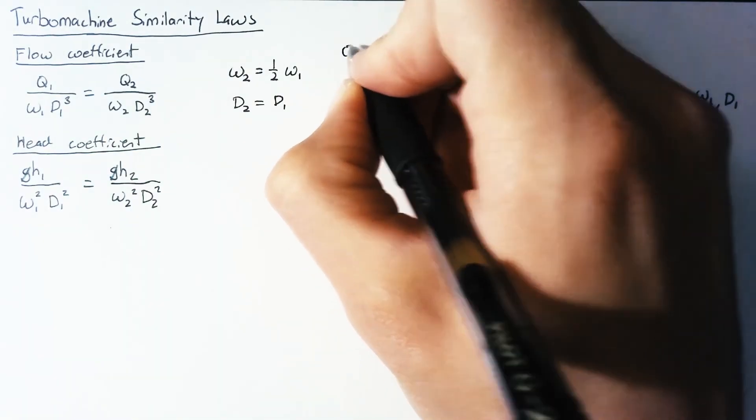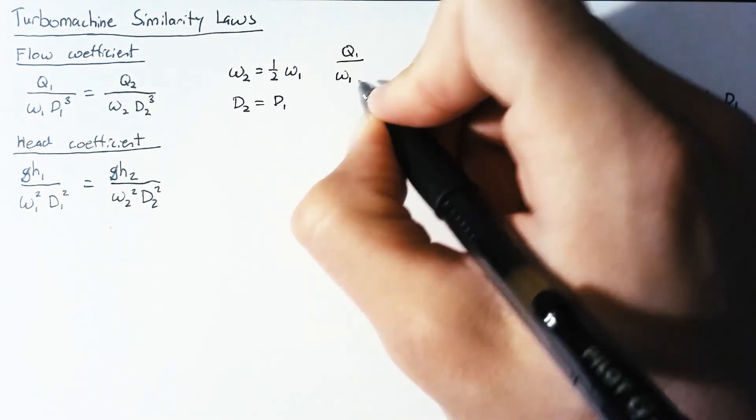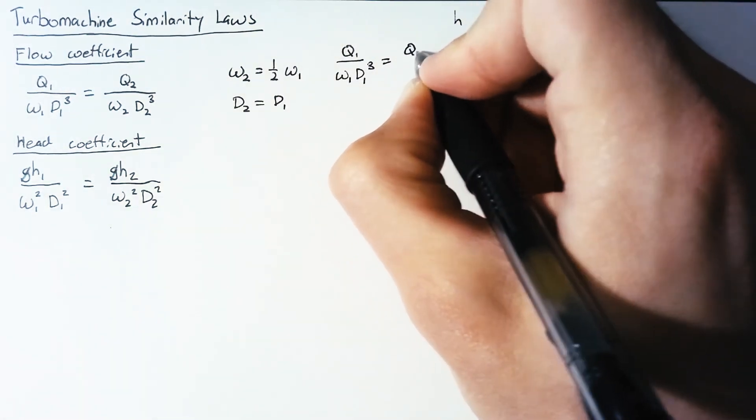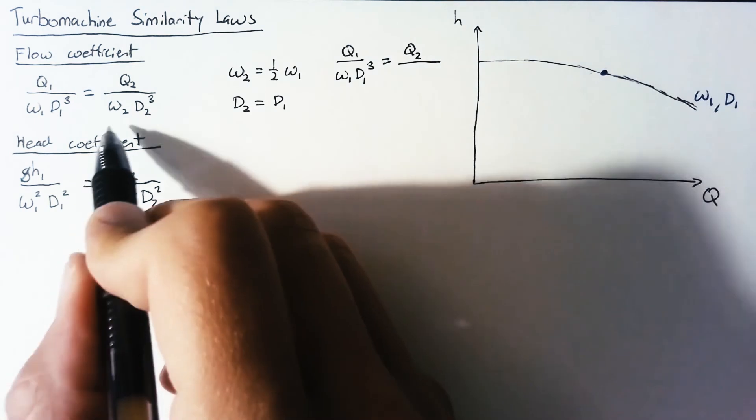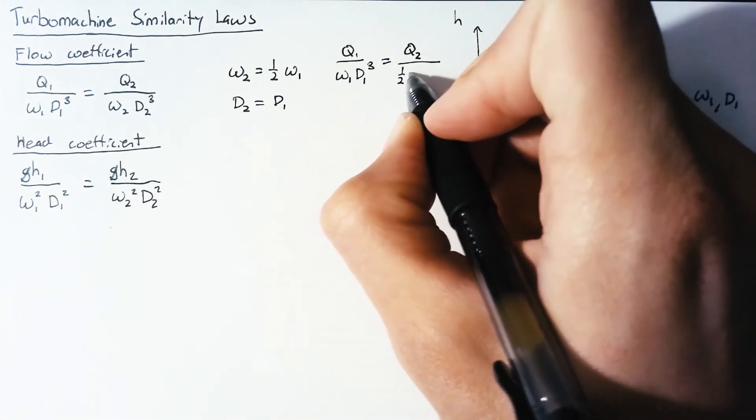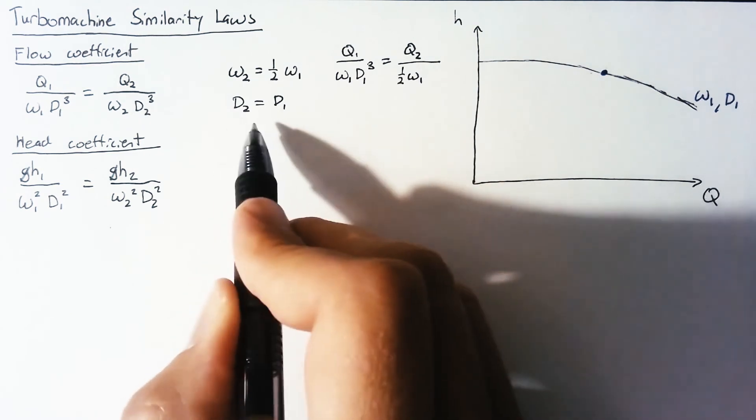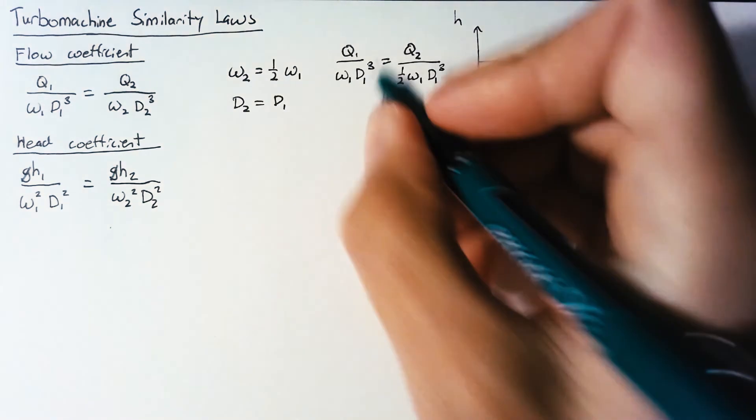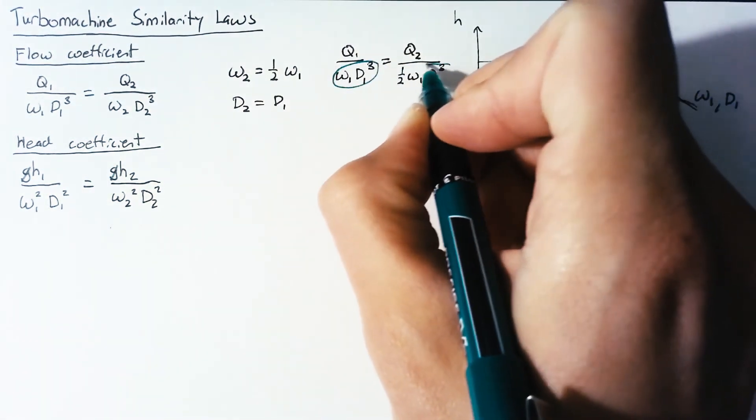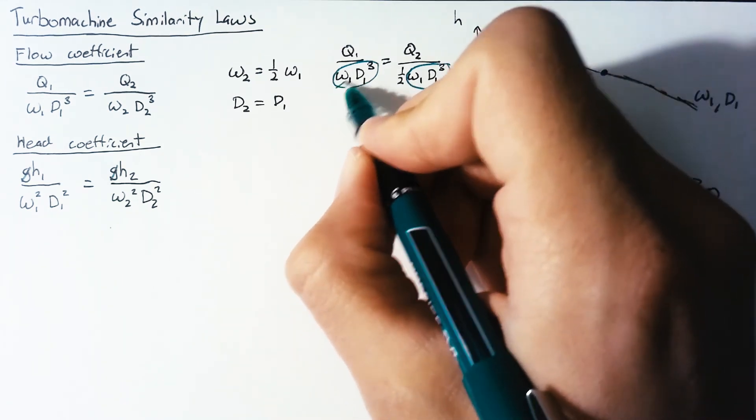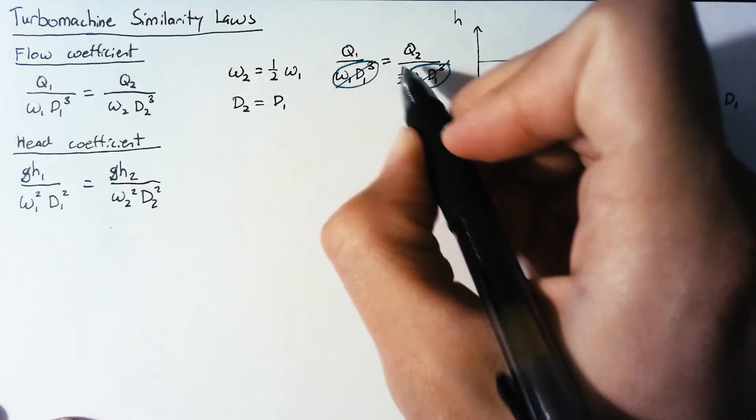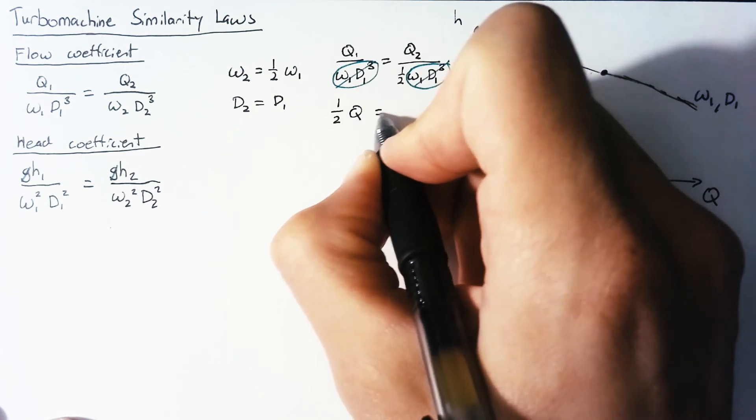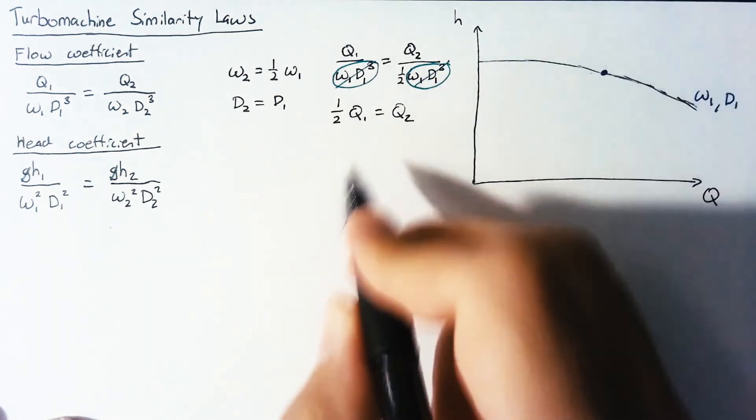Let's figure out what that does with these two coefficients. For the flow coefficient, the left hand side isn't going to change at all. Our right hand side though, we need to replace these two values. So our omega 2 is going to become a one half omega 1 and then since our diameter isn't changing we can just write this as D1 cubed. Simplifying this, these values here are exactly the same on both sides so we can just cancel them out. Our result from that after moving the one half to the left hand side is that our Q2 is one half of our original Q.